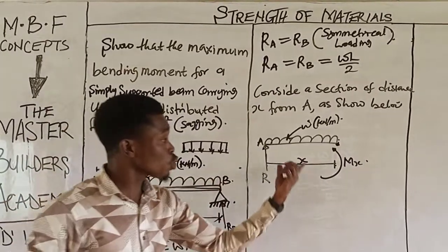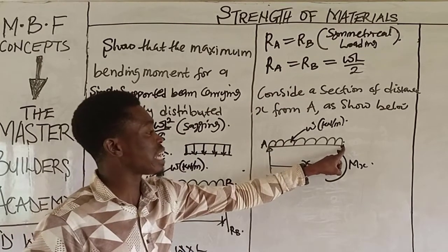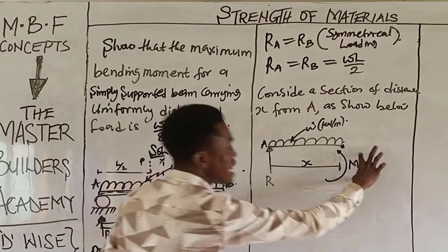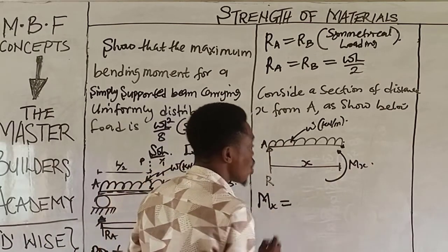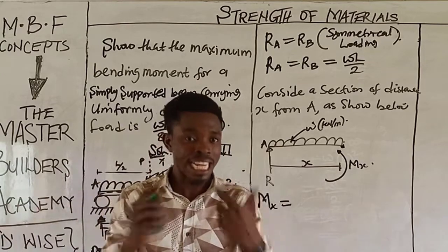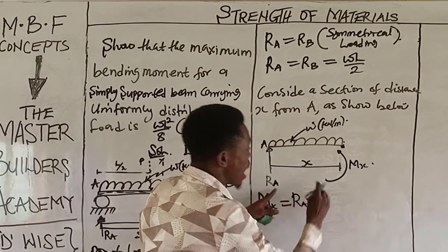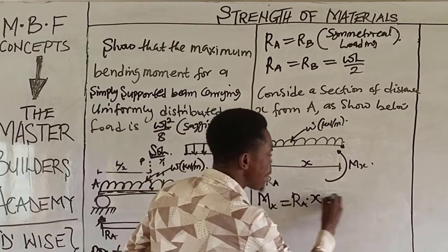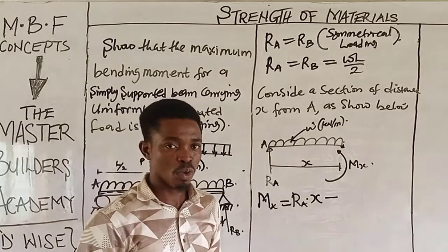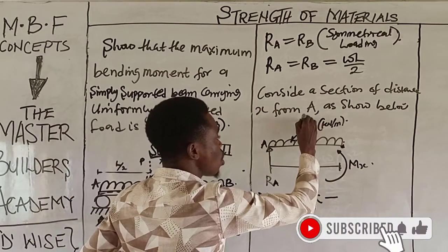We have two active forces to consider when taking moment at this cut section: the reaction and the load. The moment equation is: M_X equals moment due to reaction minus moment due to loading. Moment due to reaction is R_A multiplied by the distance X. For the moment due to loading, you must first convert the UDL over length X to a point load, which gives W times X.